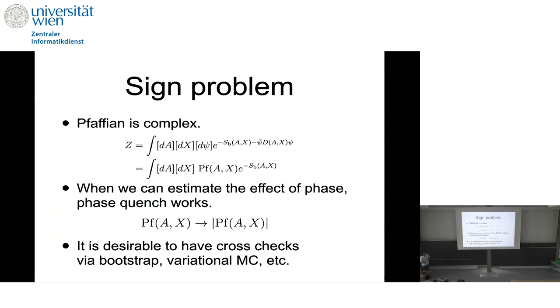And the more serious issue is a sign problem. And so this is a partition function. And if we integrate out fermion, we get the pfaffian. This is complex in general. And IKKT model had the same issue. And in the case of IKKT model, it seems that if you forget about the phase of the pfaffian, the result is completely different. You really need the pfaffian. Maybe that Nishimura-san will explain in his talk.